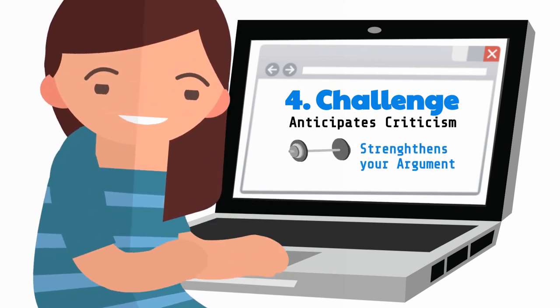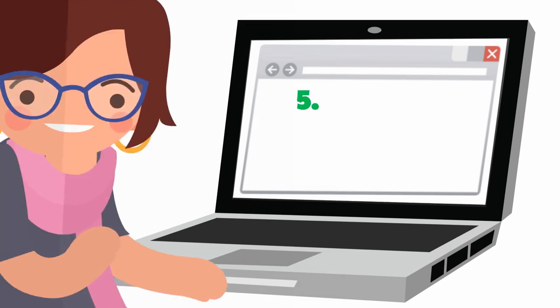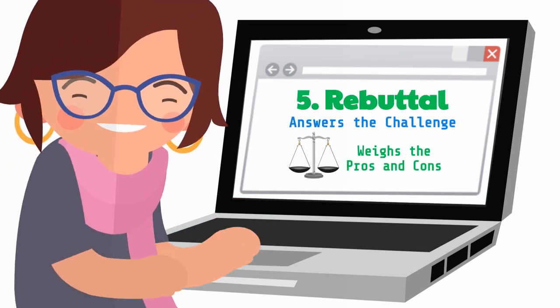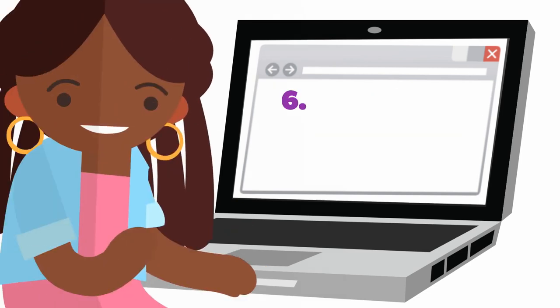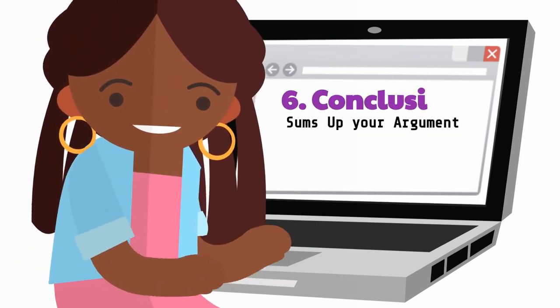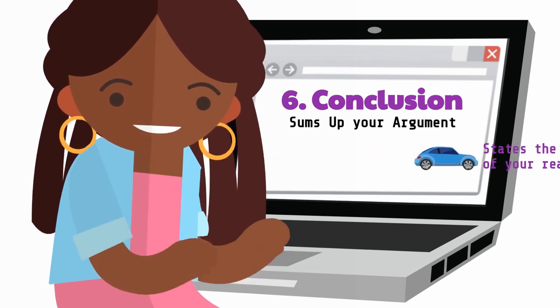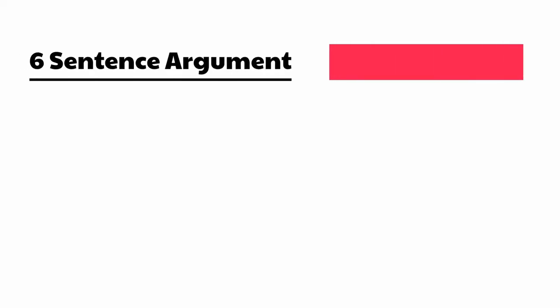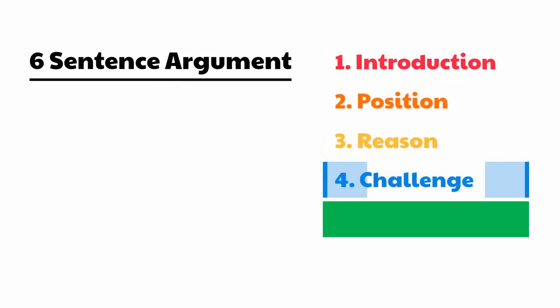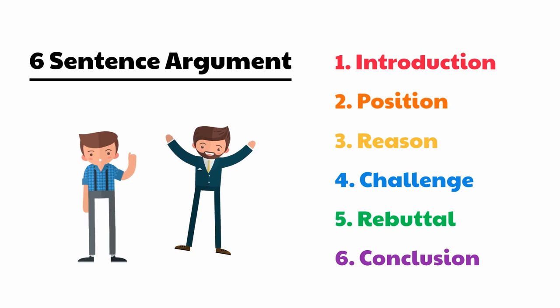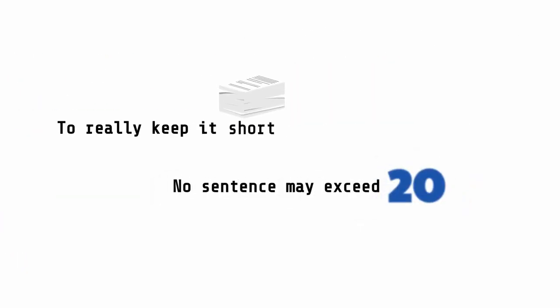Your rebuttal provides an answer to the challenge, informing the reader that you have weighed the pros and cons of your position. Finally, the conclusion sums up your argument and states the result of your reasoning, driving home your message. The structure of a 6SA is simple — each sentence fulfills a specific function within the whole argument. As a whole, the argument aims to convince a critical reader, and to really keep it short, no sentence may exceed 20 words.